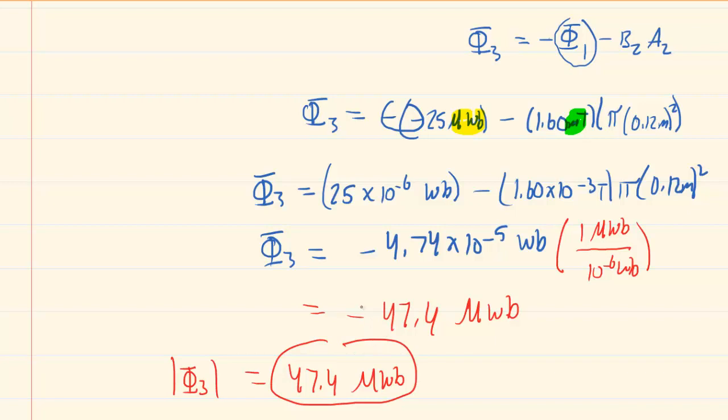And then, the direction is indicated by the negative sign. We mentioned this earlier that if you have a negative magnetic flux, that means the flux is actually entering the surface. So as far as the direction is concerned, we would say into the Gaussian surface. And that would be the answer for the direction.